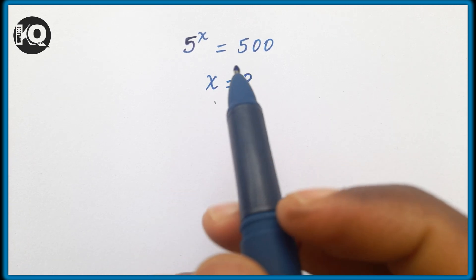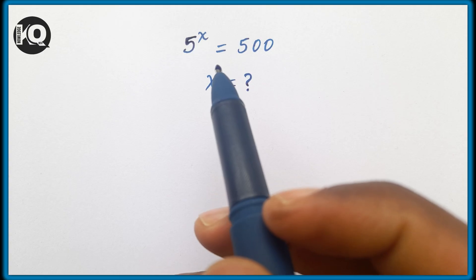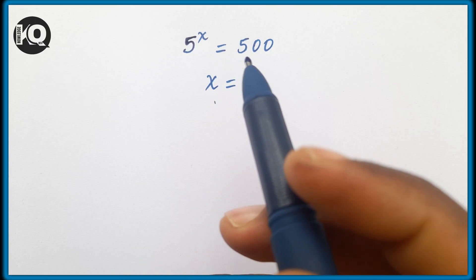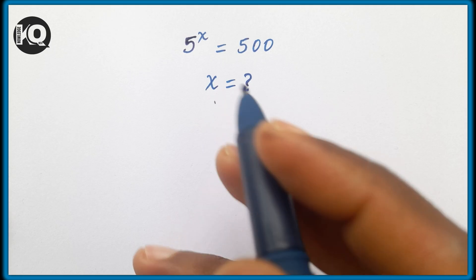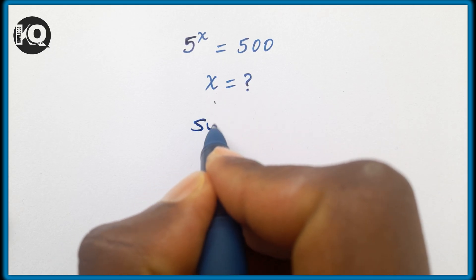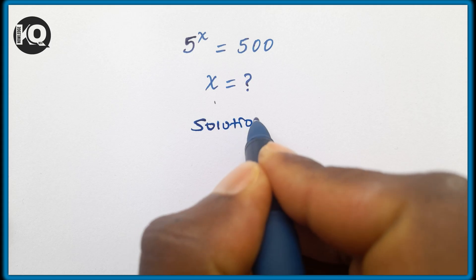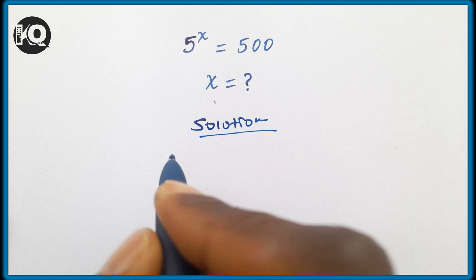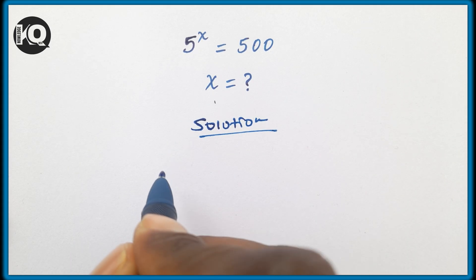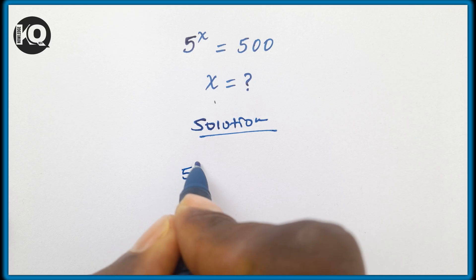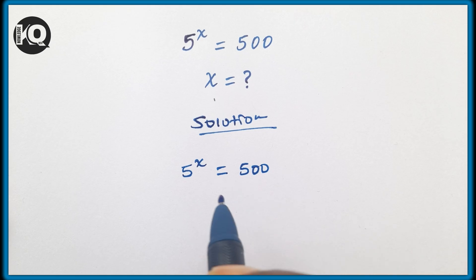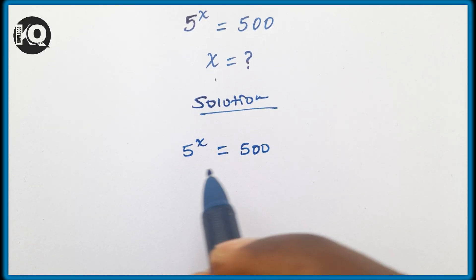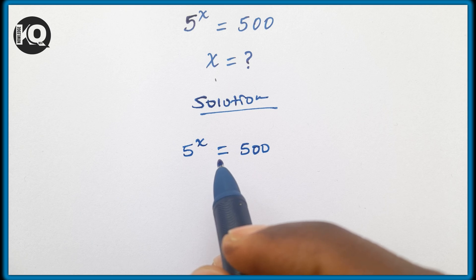Hello everyone, welcome. We're going to solve the math equation 5 to the power of x, which is equal to 500, and find the value of x. In the first step, let's recall the problem: 5^x = 500. As you can see, this is an exponential equation, so it can be solved by introducing logarithms on both sides.